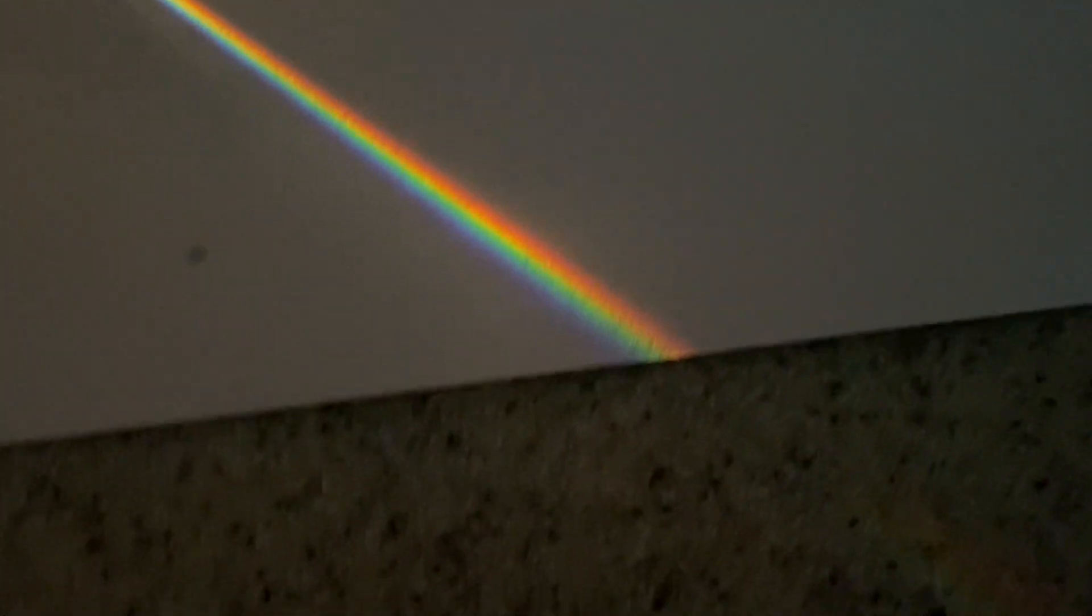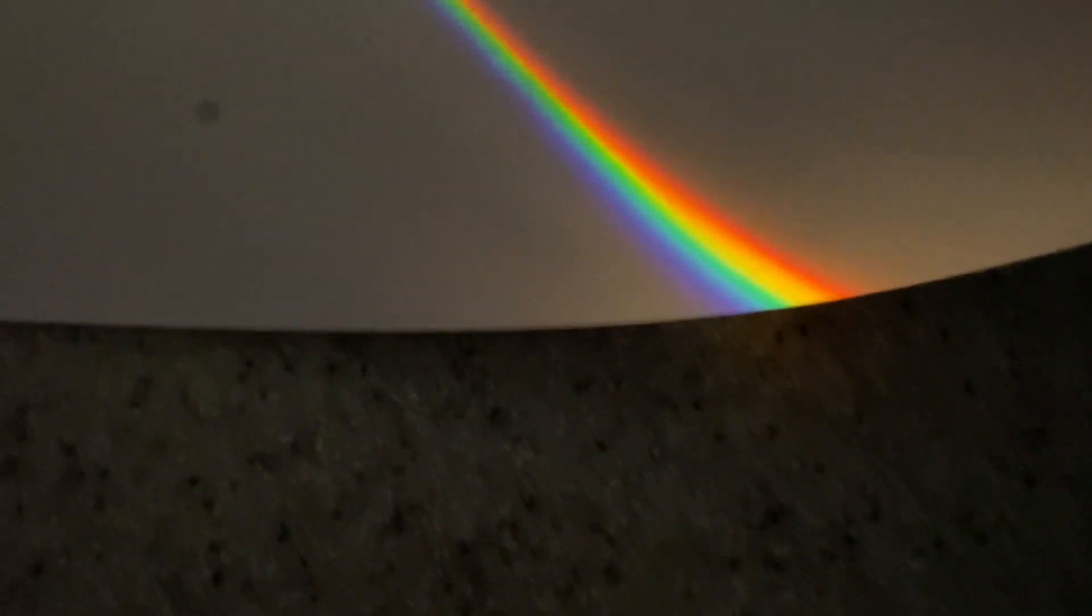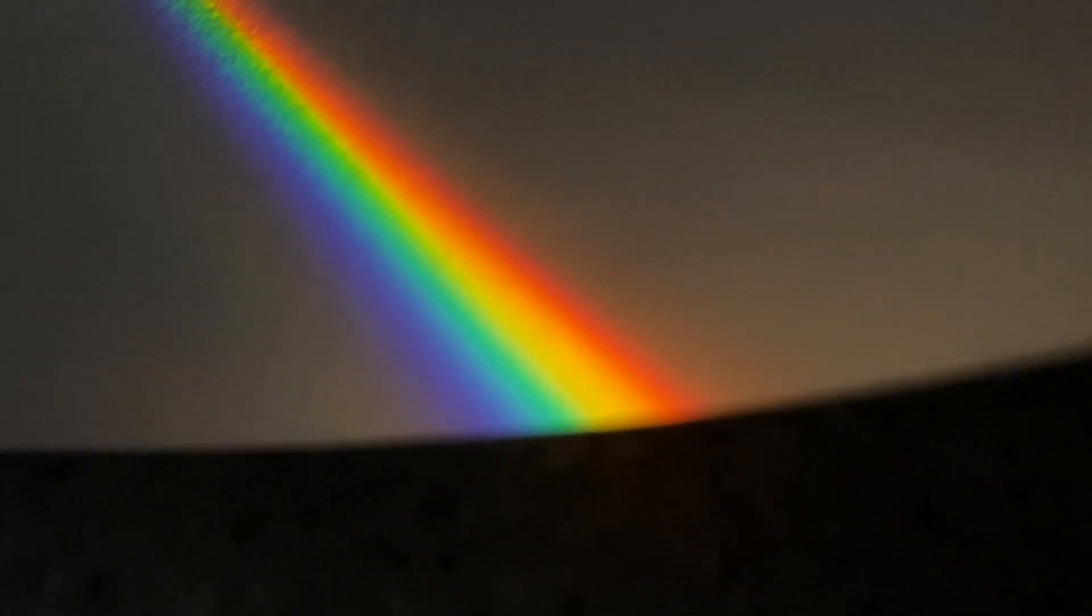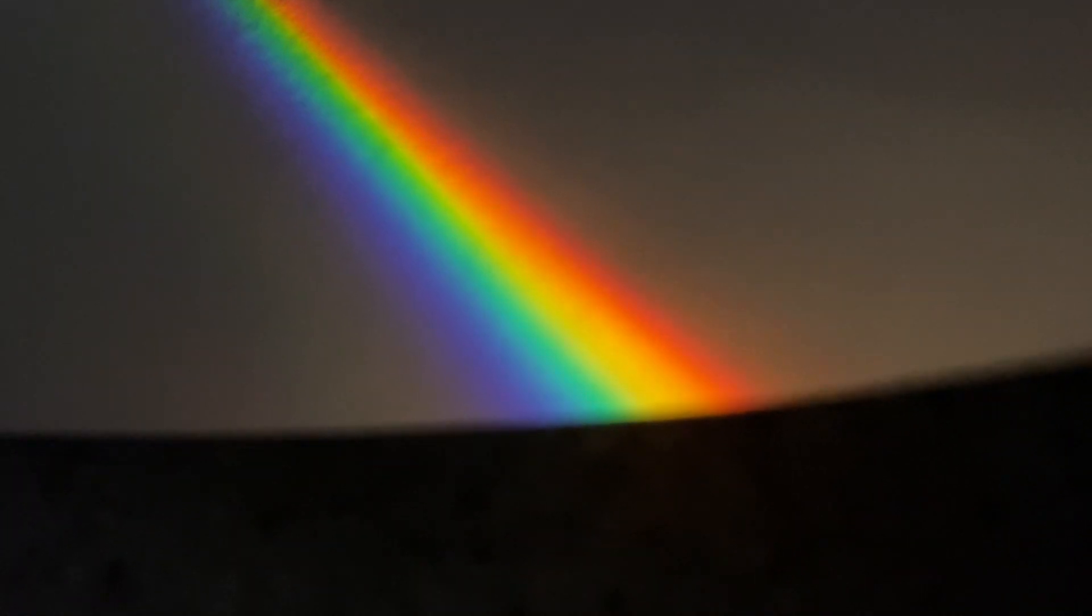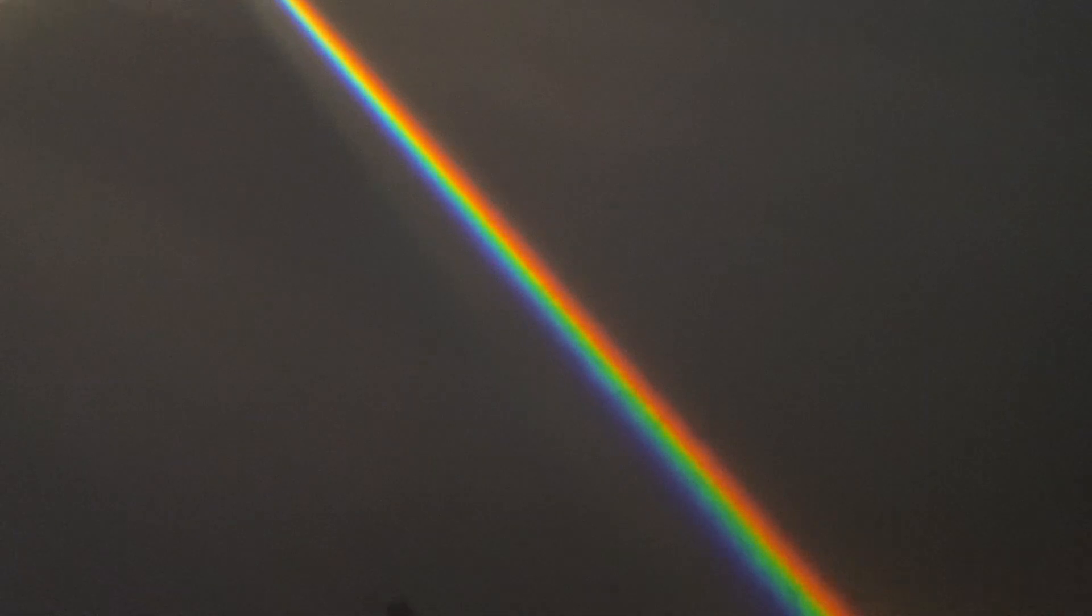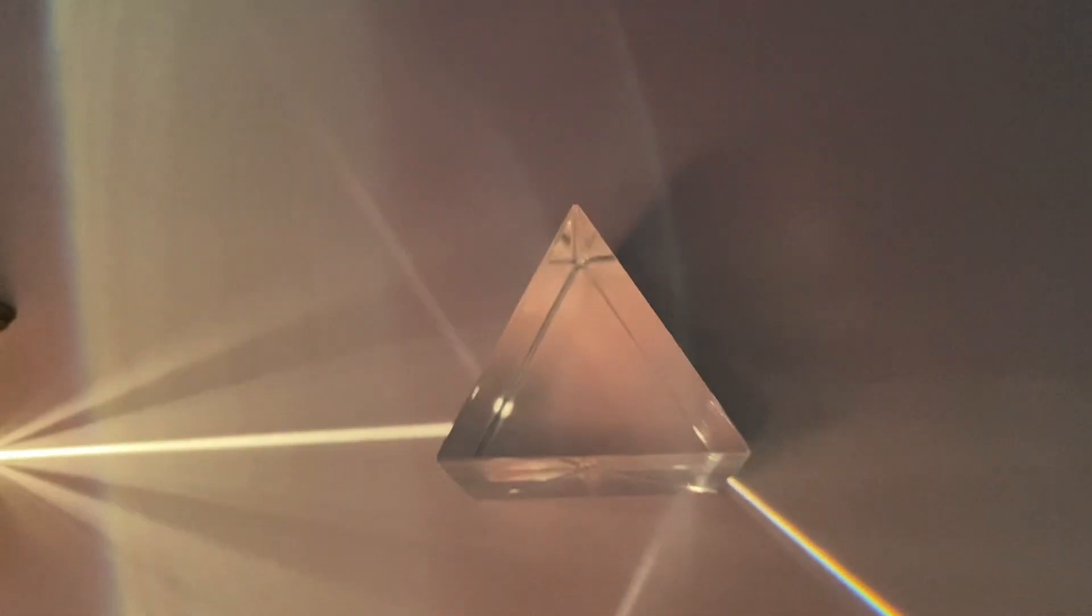We come down this way. You can see that we get a spectrum, all the colors of the rainbow. Red, orange, yellow, green, blue, indigo, violet. A spectrum of light from pure white light that has passed through a prism. That's magic.